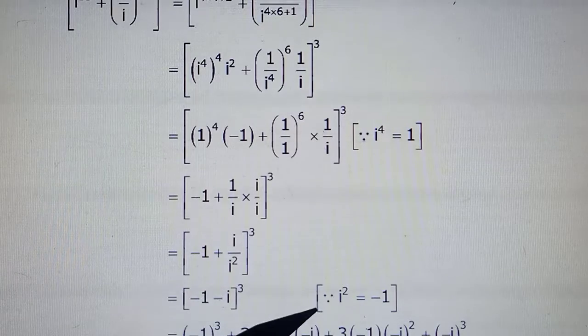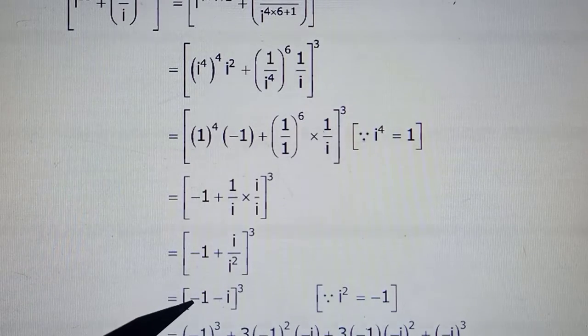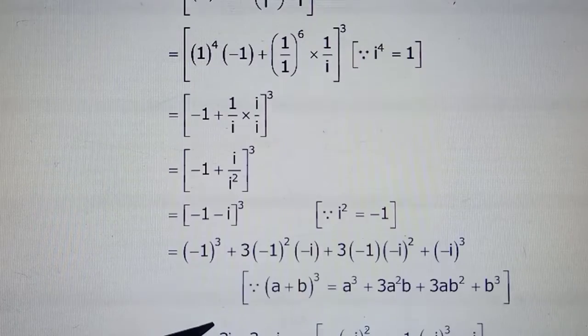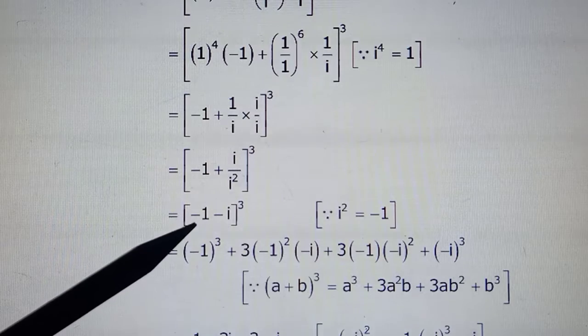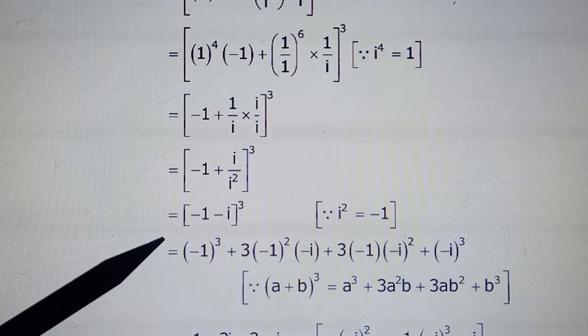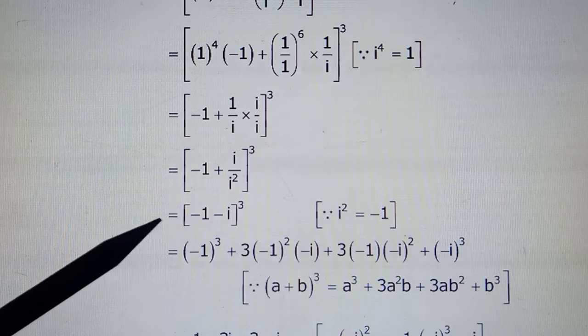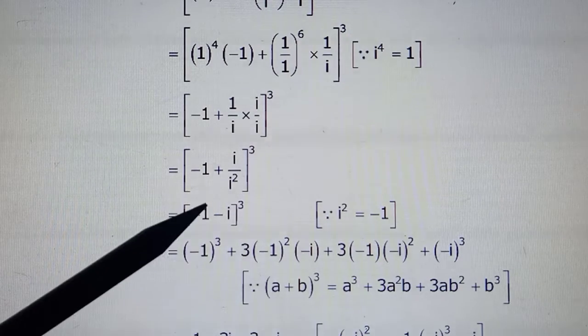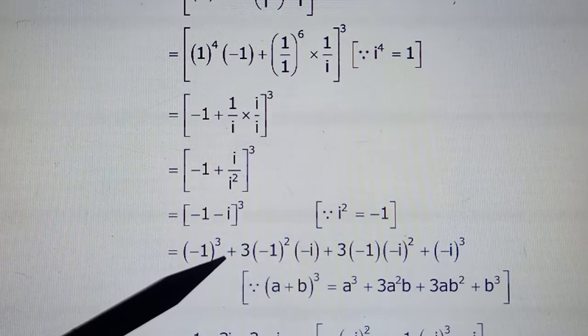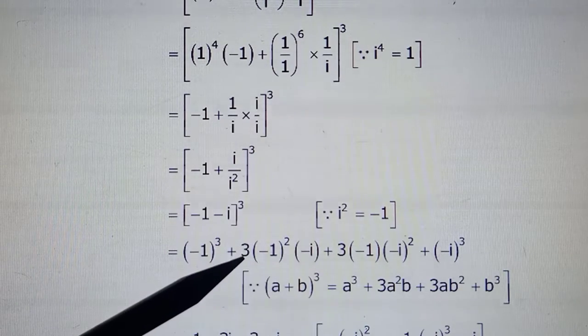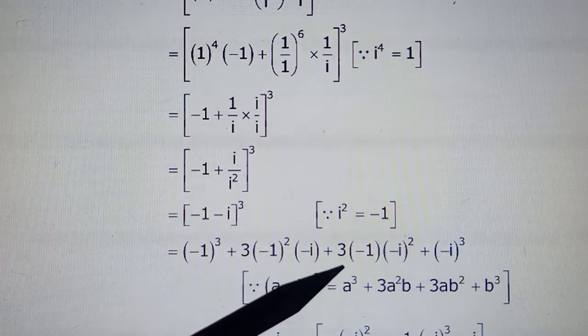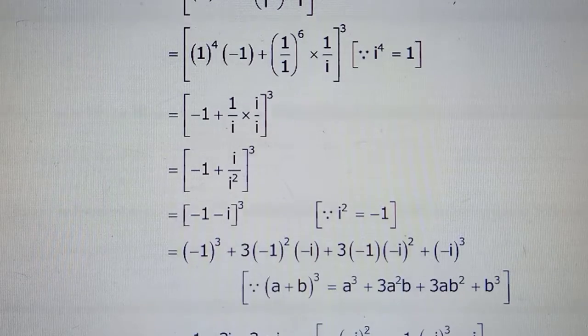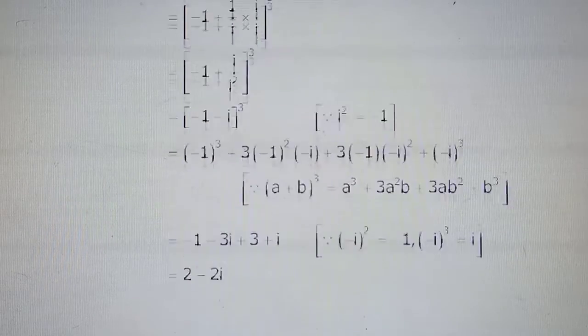So in the numerator that i becomes -i because this i^2 is -1. So -1 - i^3. Now we can open it by the whole cube. The negative sign can be taken common. So minus taken out, you can expand (a + b)^3, or take your a as -1 and b as -i, whichever way you do it. That's a^3 + 3a^2b + 3ab^2 + b^3.